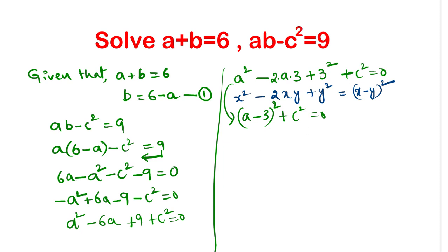Now observe this equation, this is just like x squared plus y squared equal to 0. When will it happen? When only x equal to 0 and y equal to 0. So from this equation we can write a minus 3 equal to 0 and c equal to 0. Therefore, a equal to 3 and c equal to 0.